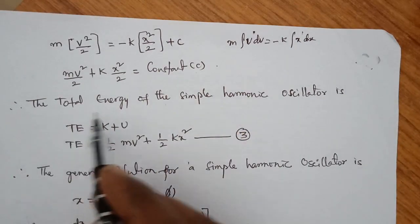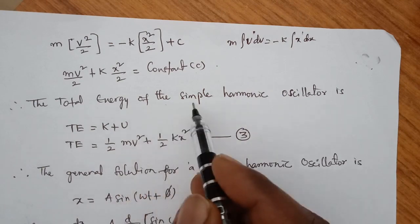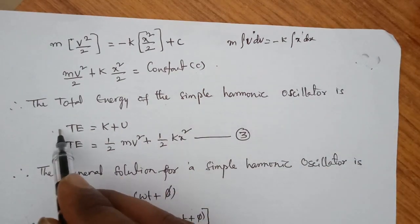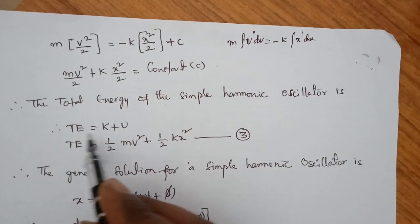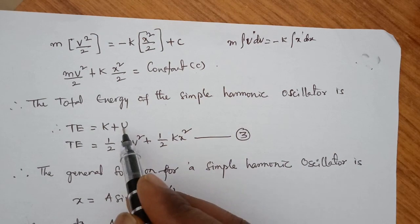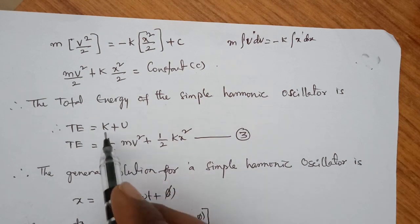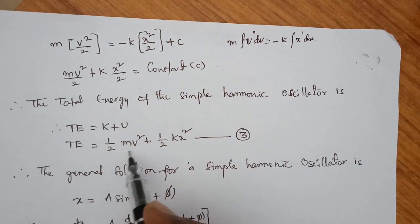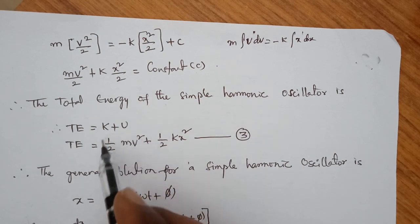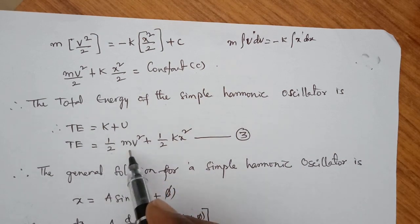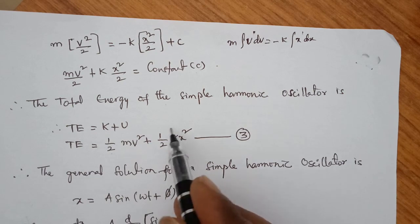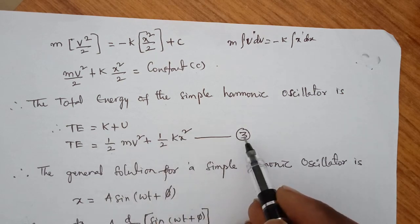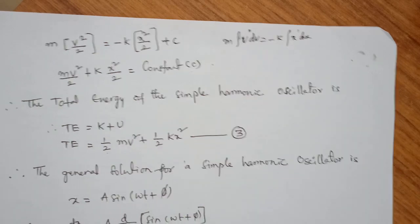The total energy of the simple harmonic oscillator: total energy E equals kinetic energy plus potential energy. Equation 1 gives half mv squared and equation 2 gives half kx squared. So total energy E equals half mv squared plus half kx squared. Let this be equation 3.